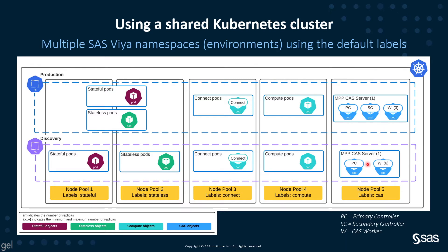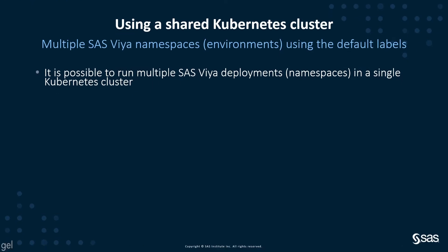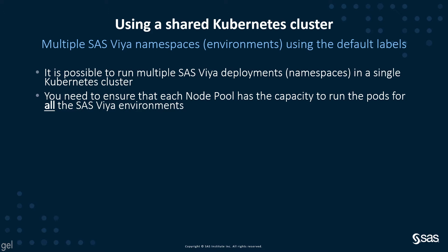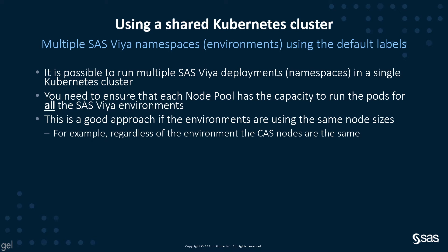In the discovery environment, we've got another MPP instance of the CAS server — it could equally be an SMP instance if we want. In this case, we've got a primary controller, and this environment for the data scientists has six workers. It is possible to have a shared Kubernetes cluster for running multiple SAS Viya namespaces or environments, and in this example we're using the default labels. You need to ensure that each node pool has the capacity to run the pods for all the SAS Viya environments. This is a good approach if the environments are using the same node sizes.